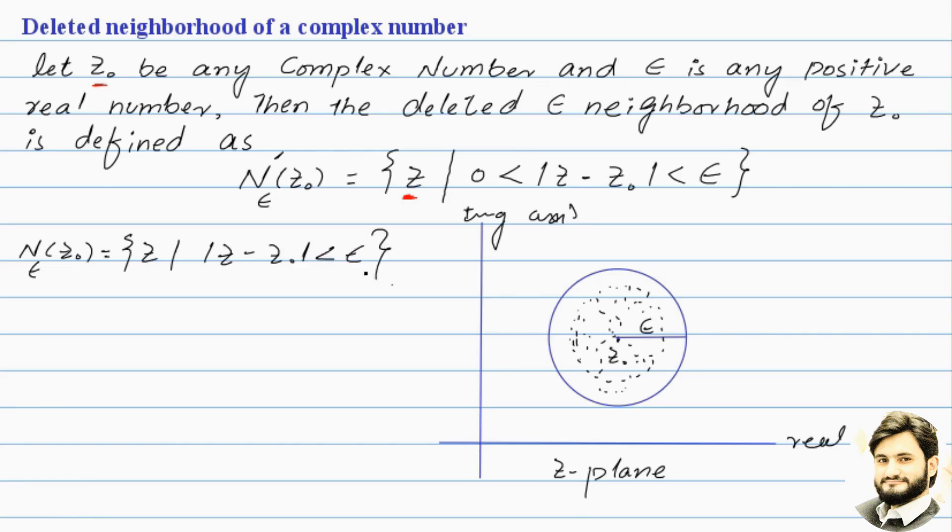Epsilon could equal 0.5, 0.1, 1, 2 - it's a positive number. If we have z-naught to place it, the distance condition applies.